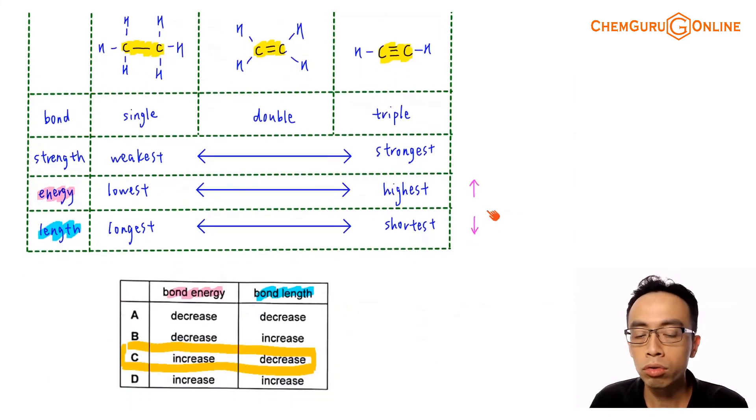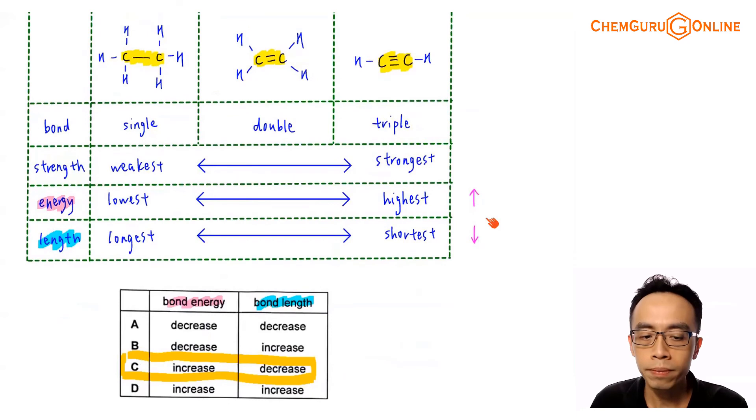We can look through the options in this question. Involving bond energy, we expect the bond energy to increase, and involving bond length, we expect the bond length to decrease. The answer to this question would be option C.